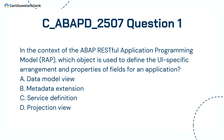In the context of the ABAP RESTful Application Programming Model, RAP, which object is used to define the UI-specific arrangement and properties of fields for an application? A. Data Model View. B. Metadata Extension. C. Service Definition. D. Projection View.